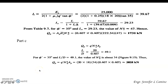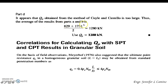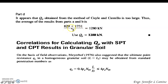Based on the given values, the Coils and Castillo result of 2,028 kN is too large. Therefore, we take the average of the Meyerhof method value and the Vesic value: (829 + 1,731) / 2. The average is 1,280 kN. Our adopted point bearing capacity Q sub P is 1,280 kN.